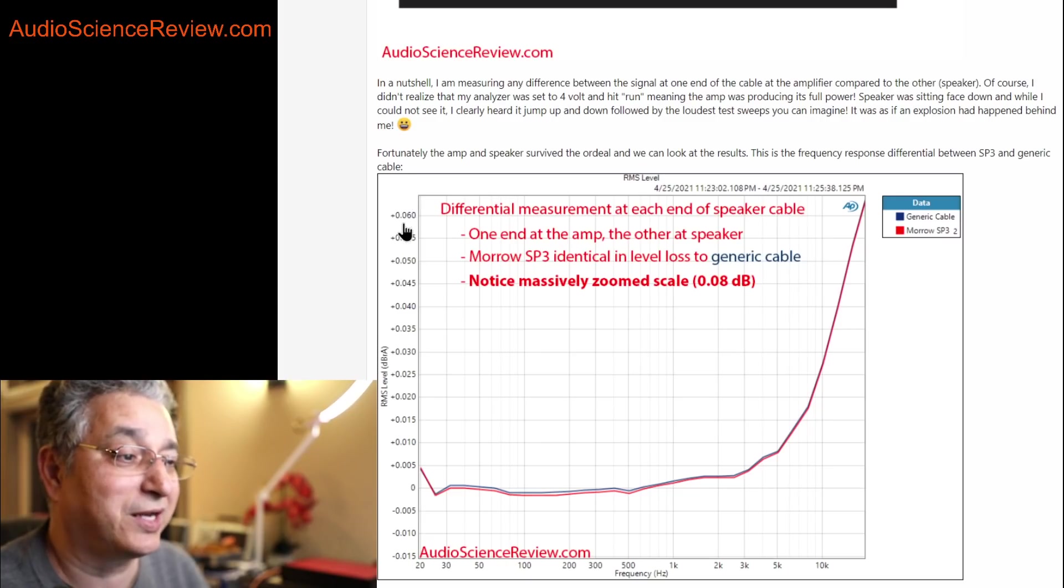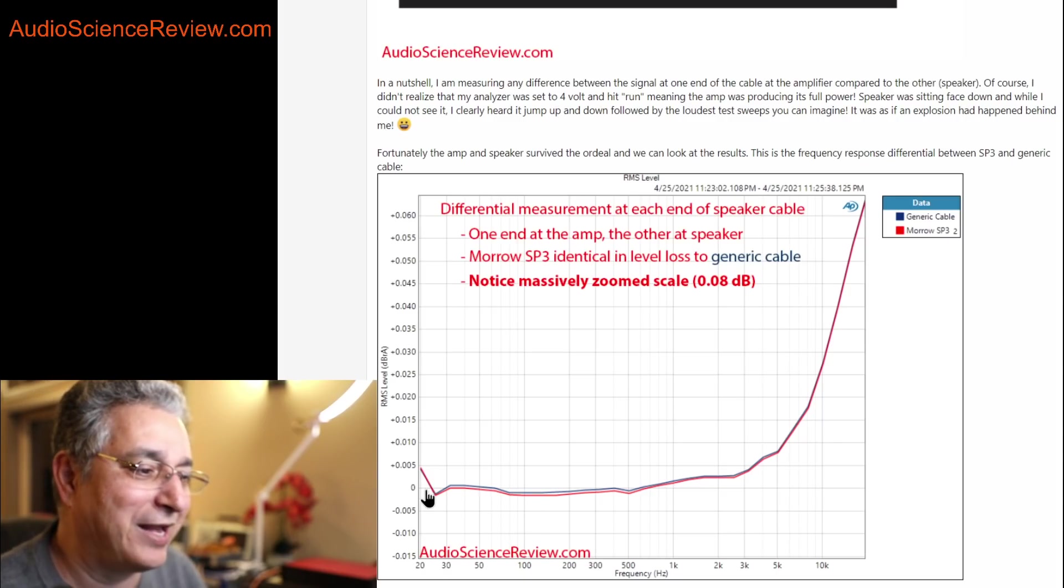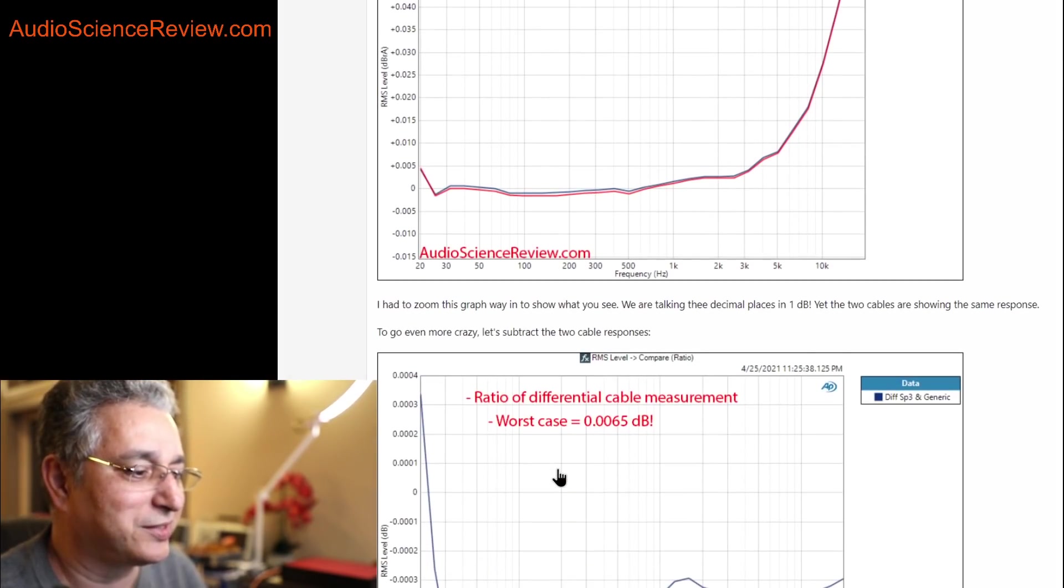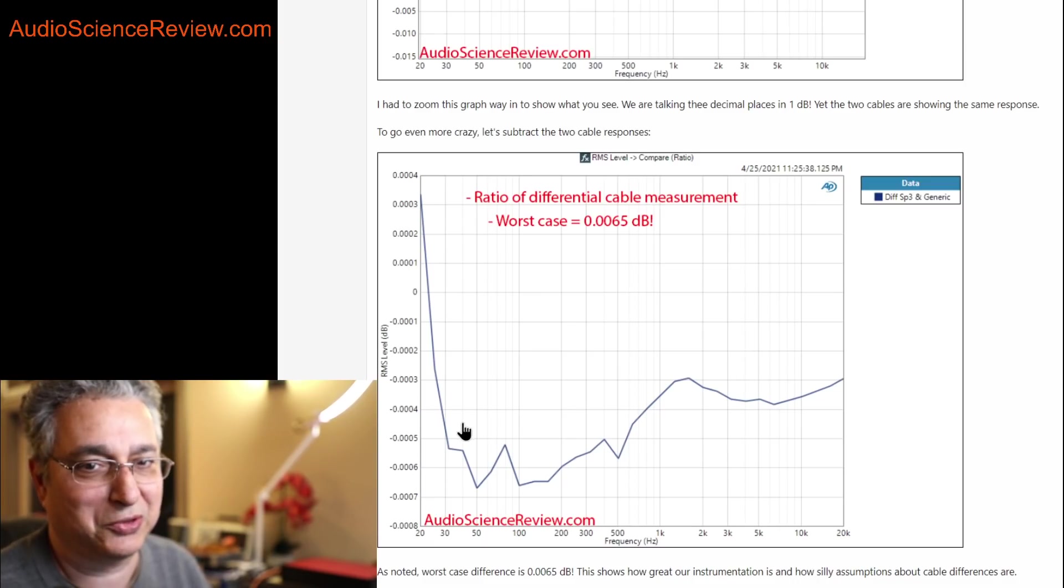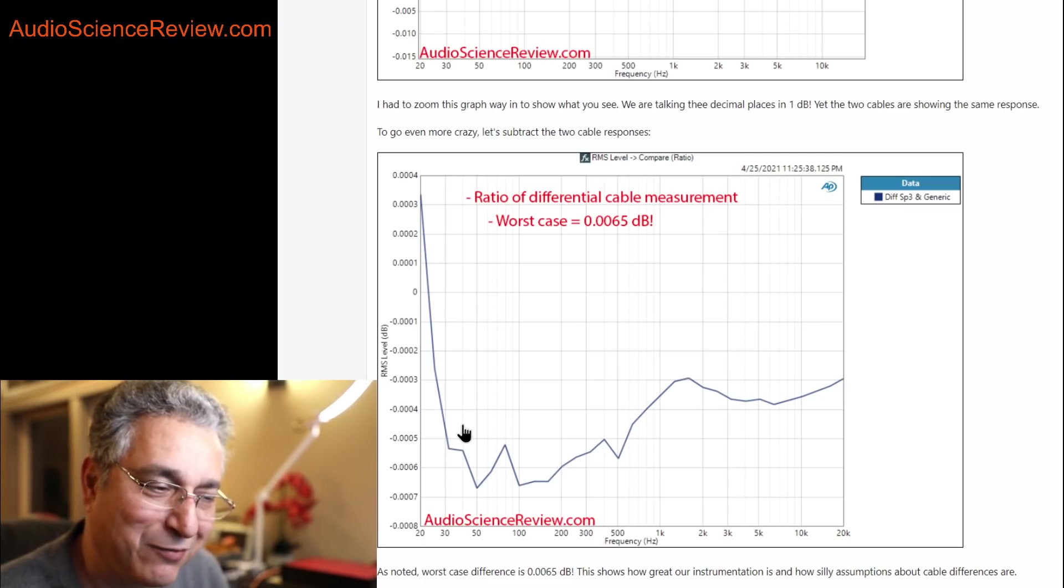So if you add up, figure this out, the entire scale from bottom to the top is one-tenth of a dB, not one dB, 0.1 dB. And within that, we have this tiny, tiny, tiny change. So it just gets lost on that. We can actually plot the difference between these two curves, and looking at them as an absolute, and this is what the difference between the two cables are. And look at the number of zeros and decimal places in here. It's 0.0006 dB difference between the two. So it just is an absurdity on top of absurdity level of difference.